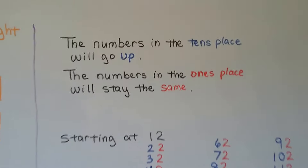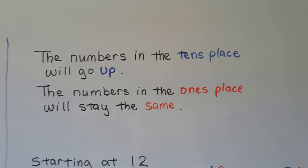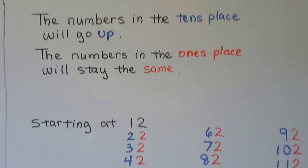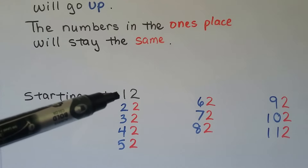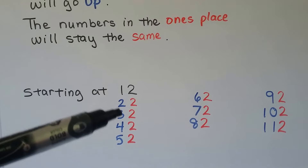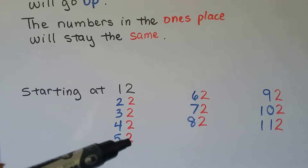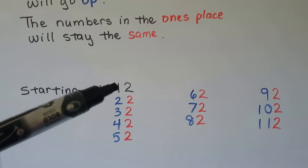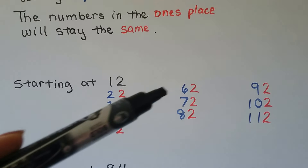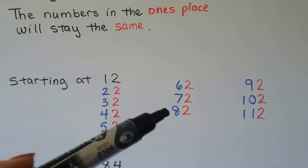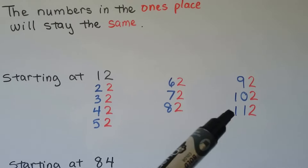The numbers in the tens place will go up, and the numbers in the ones place will stay the same. If we're starting at 12, the tens place will go up: 2, 3, 4, 5. The ones place stays the same, so we have 12, 22, 32, 42, 52, 62, 72, 82, 92, 102, 112.